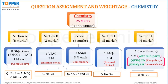Let us see question assignment and weightage for the subject chemistry in this whole science paper. The total weightage for chemistry would be 25 marks distributed among a total of 13 chemistry questions, which are compulsory.